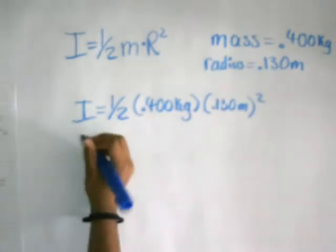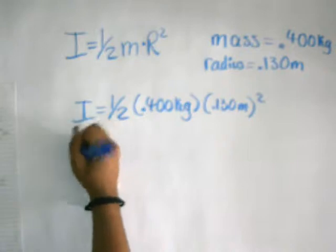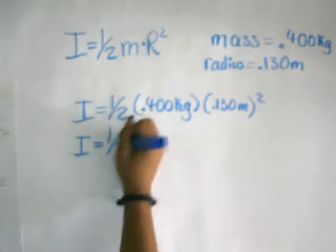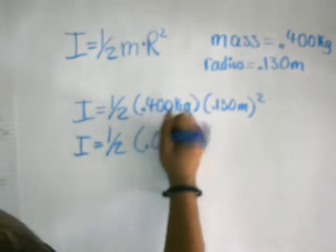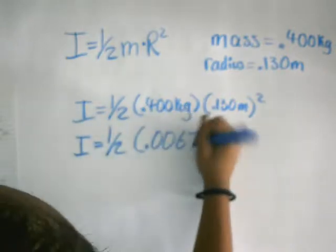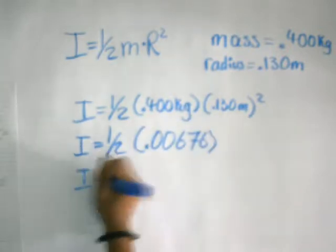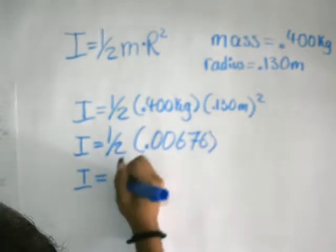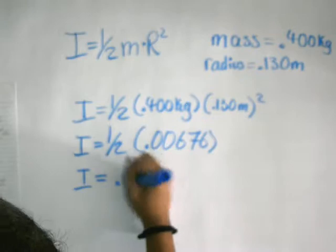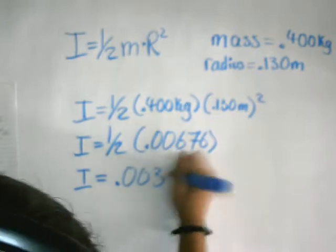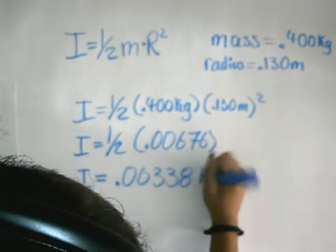So, now we have inertia is equal to one half times 0.00676. So, inertia is equal to 0.00338 kilograms meters squared.